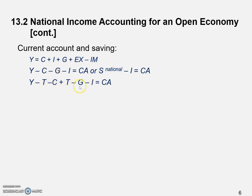The reason for this adjustment is that Y minus T is disposable income — total income minus taxes, i.e., after-tax income. Disposable income minus consumption gives us private saving — how much is saved by households. Meanwhile, T minus G gives us public saving: T is money flowing into government, G is money flowing out, and the difference is public saving — how much is saved by government.